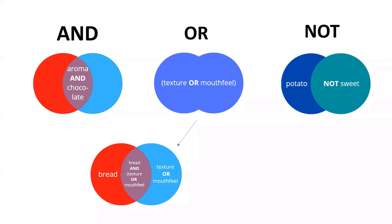You can combine AND and OR together. Here we have bread on one hand, and then texture OR mouthfeel on the other. When we combine bread AND (texture OR mouthfeel), we get results that always have the word bread, and also always have either texture or mouthfeel — or all three words. That's a way to make a search more comprehensive while still focusing on what you want.